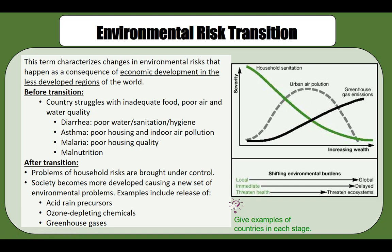After the transition, problems of household risks are brought under control and community risks from industrial and vehicular pollution start to diminish. But then a new type of risk emerges at the global level in the form of increasing levels of greenhouse gases. Such global risks are shared by all countries because of their global nature.